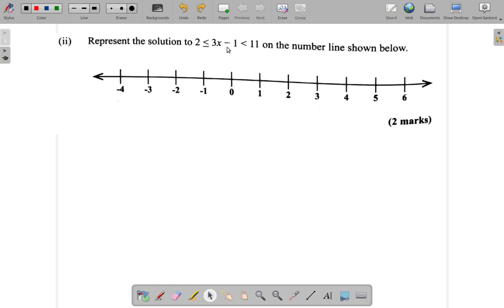Let's see if we can simplify this inequality here. 2 is less than or equal to 3x minus 1, less than 11.